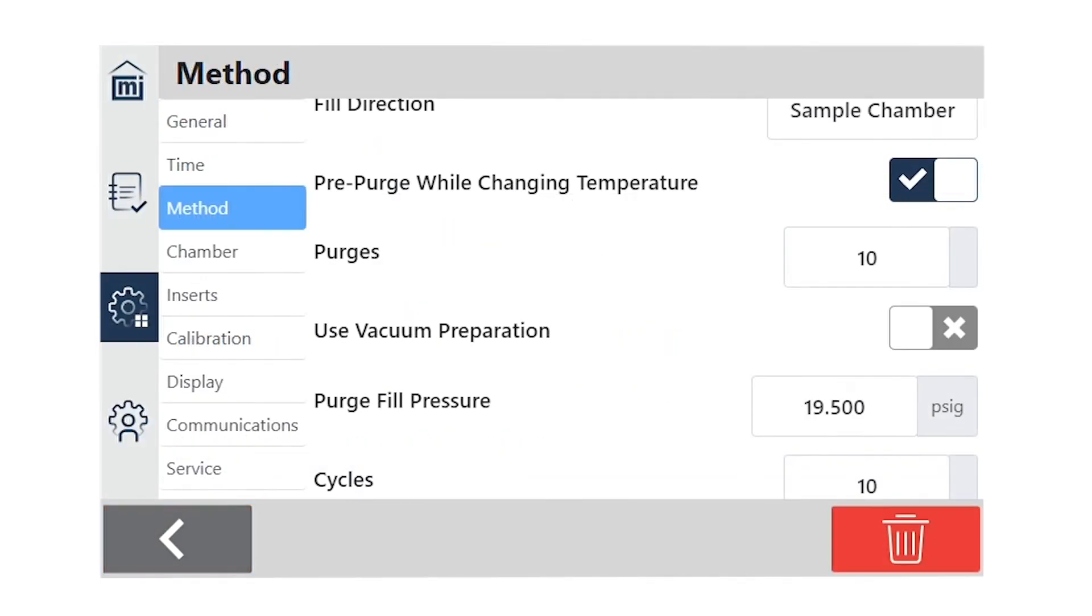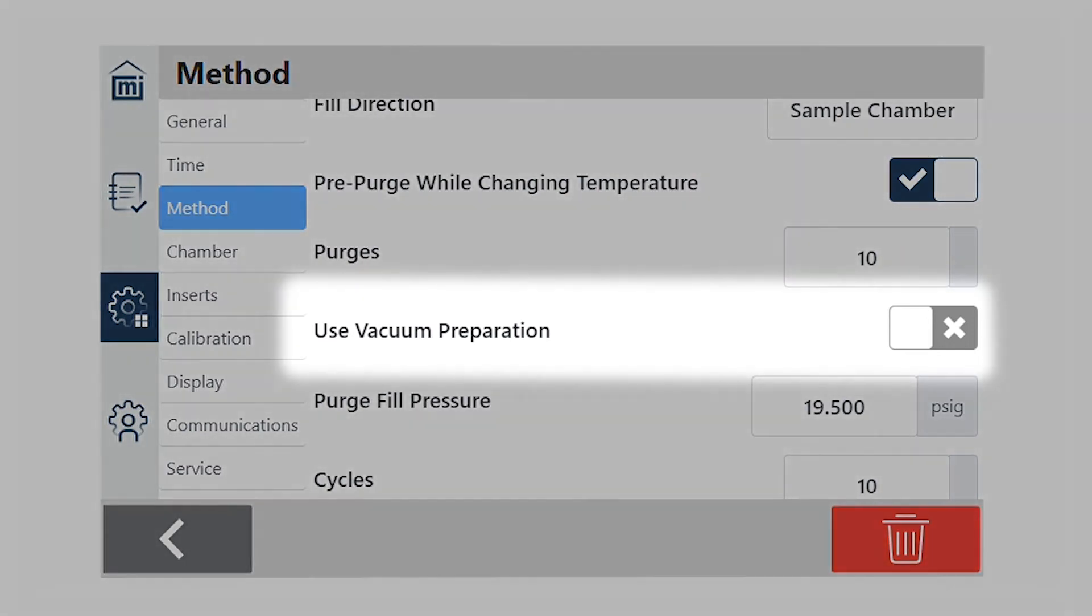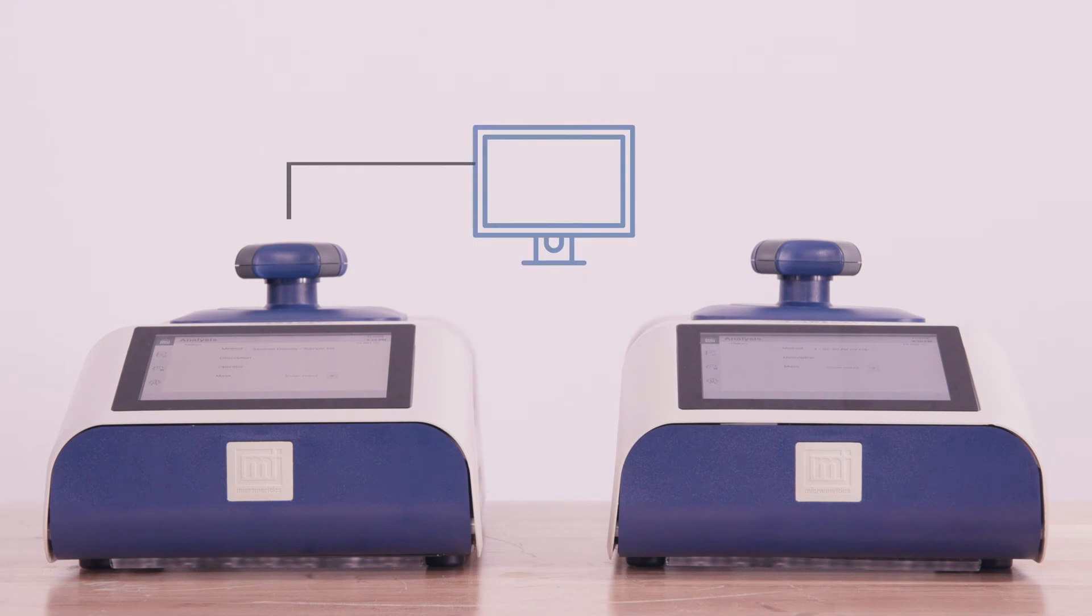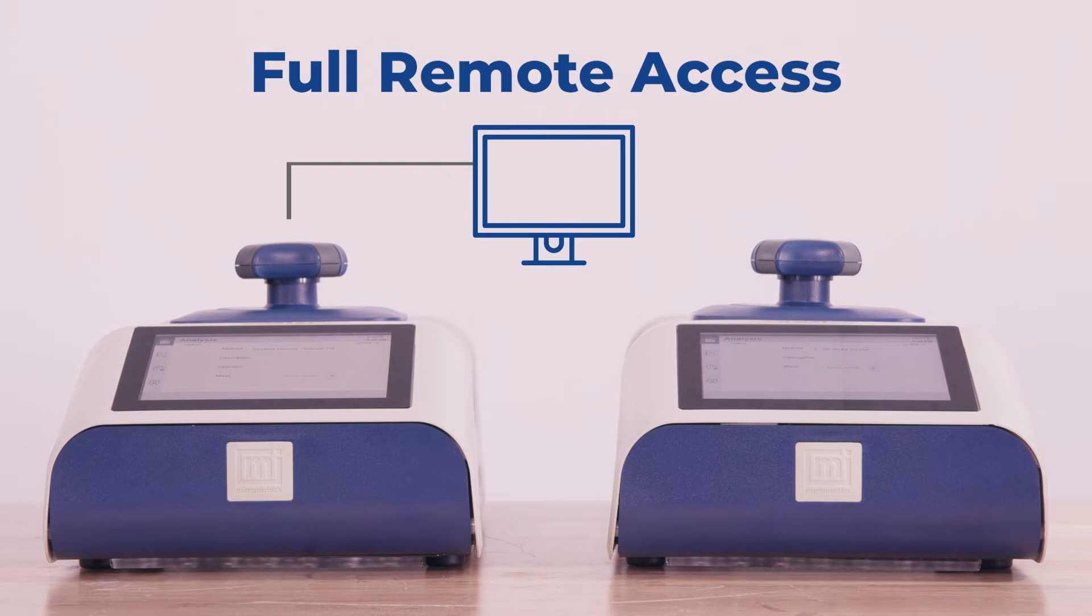The AccuPIC offers both vacuum and purge preparation options to ensure the most accurate data. While this analysis is running, let's talk about some special features of the new AccuPIC. You can connect the AccuPIC to your network and have full remote access from any computer on the same network.